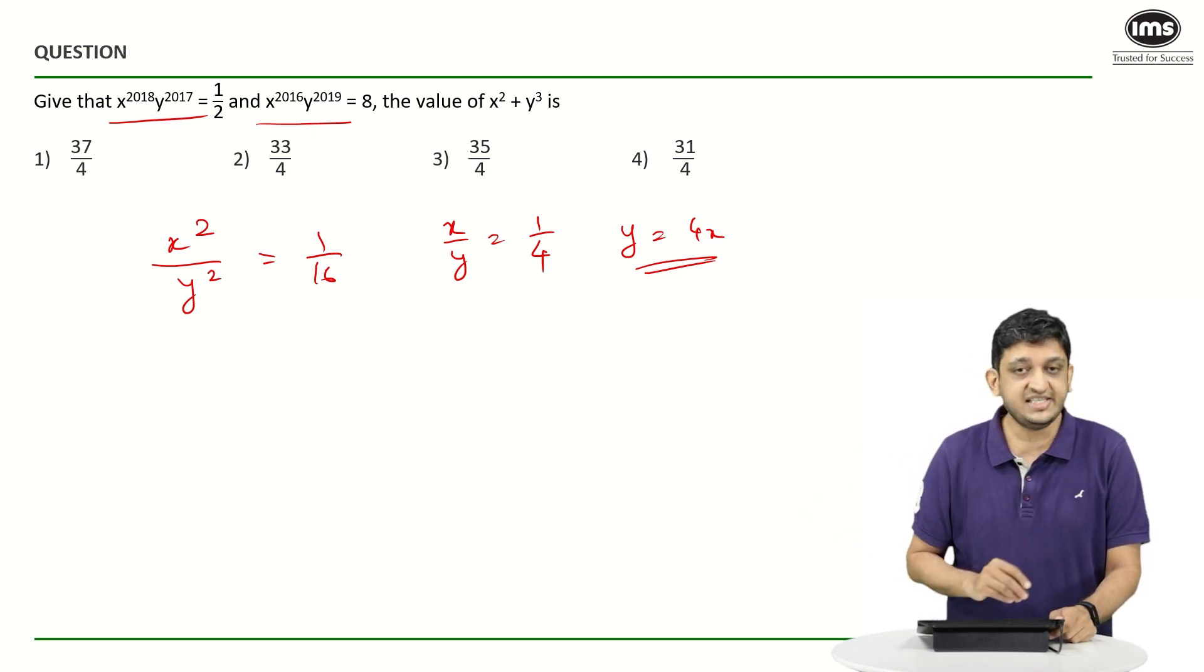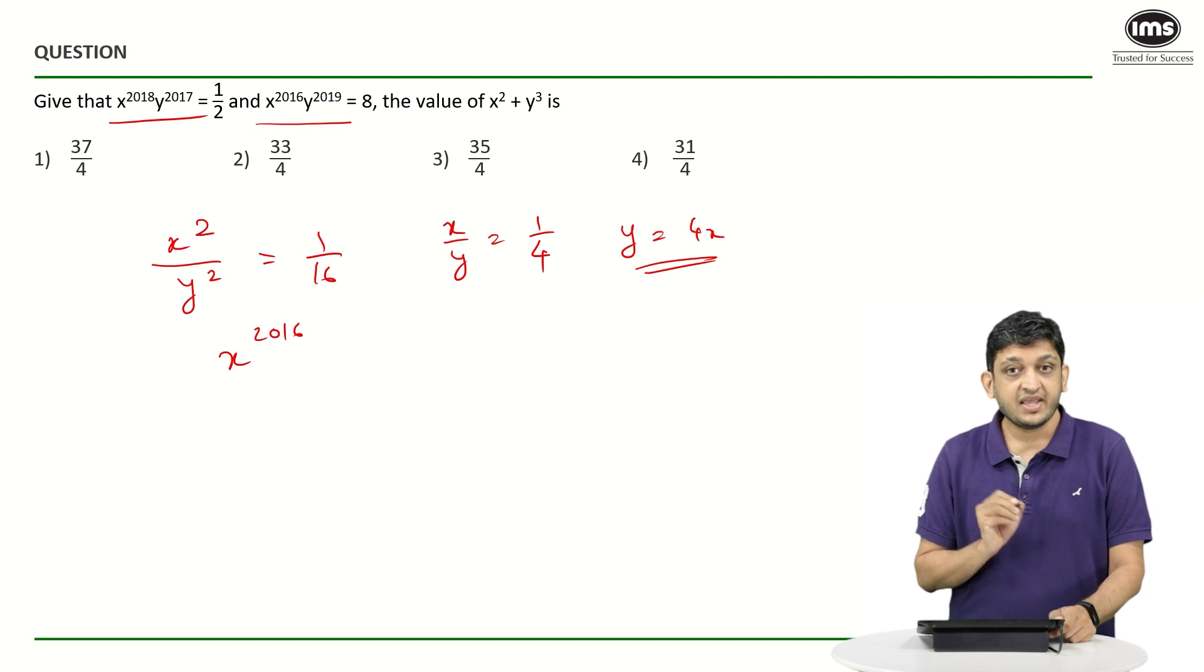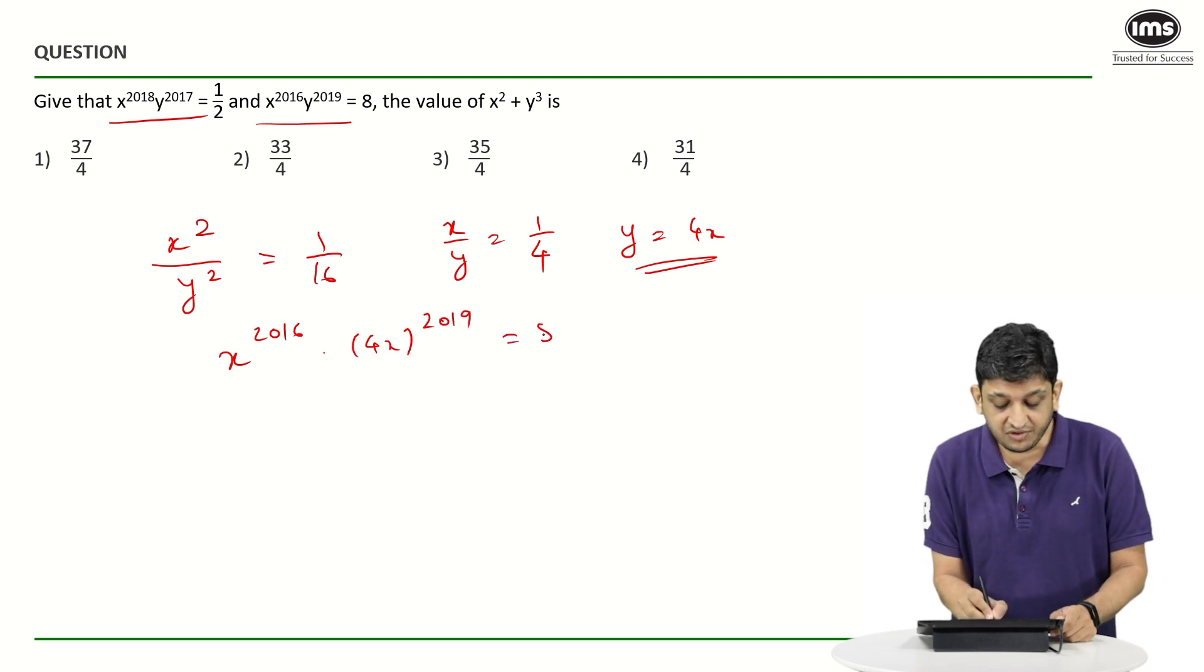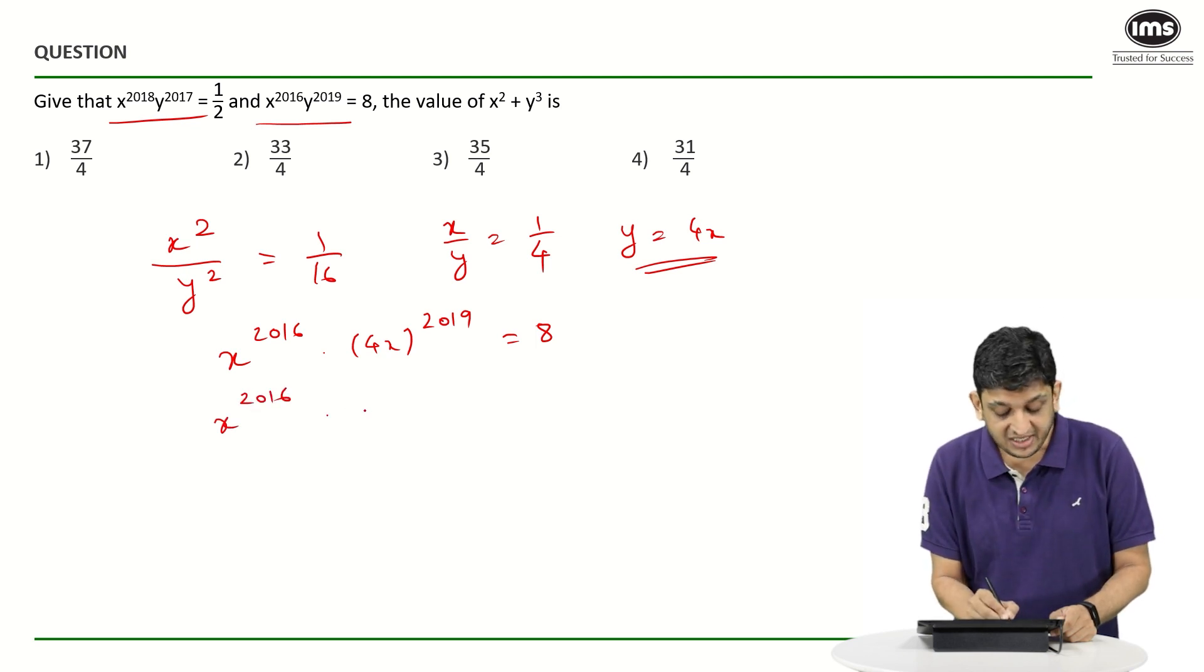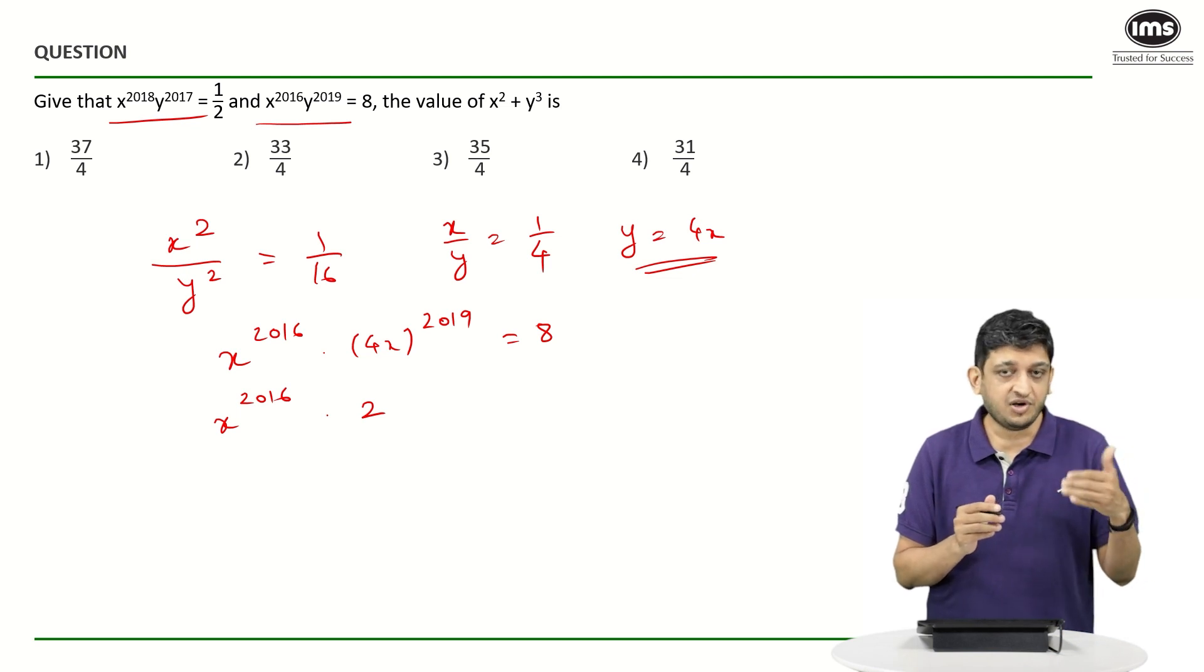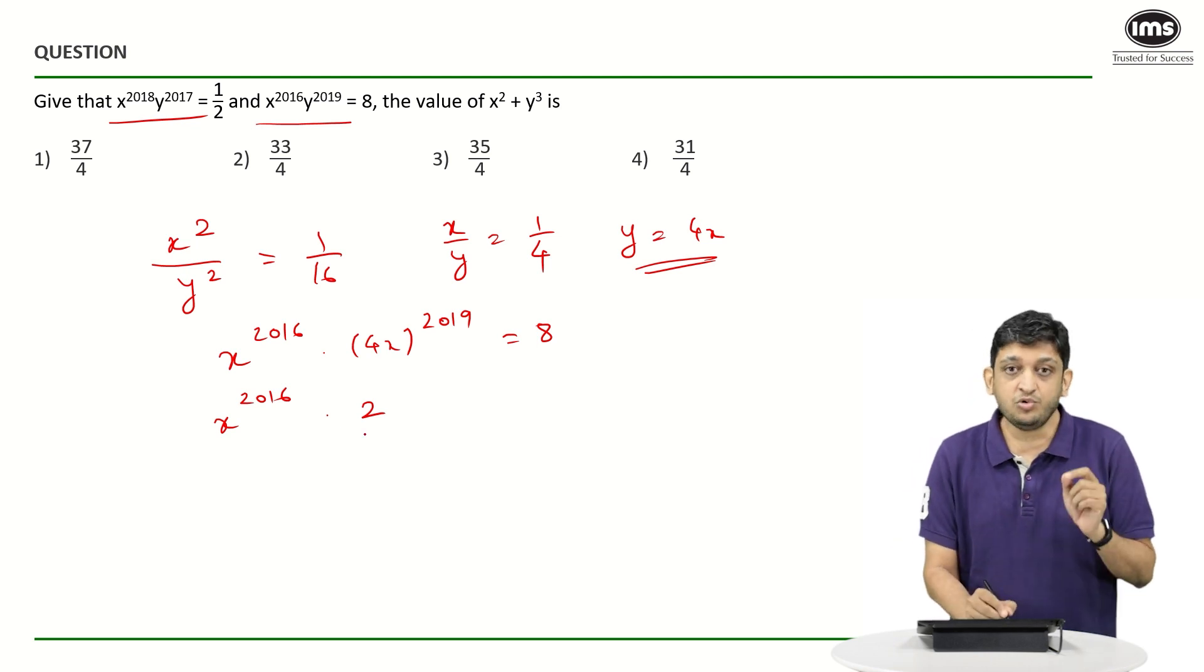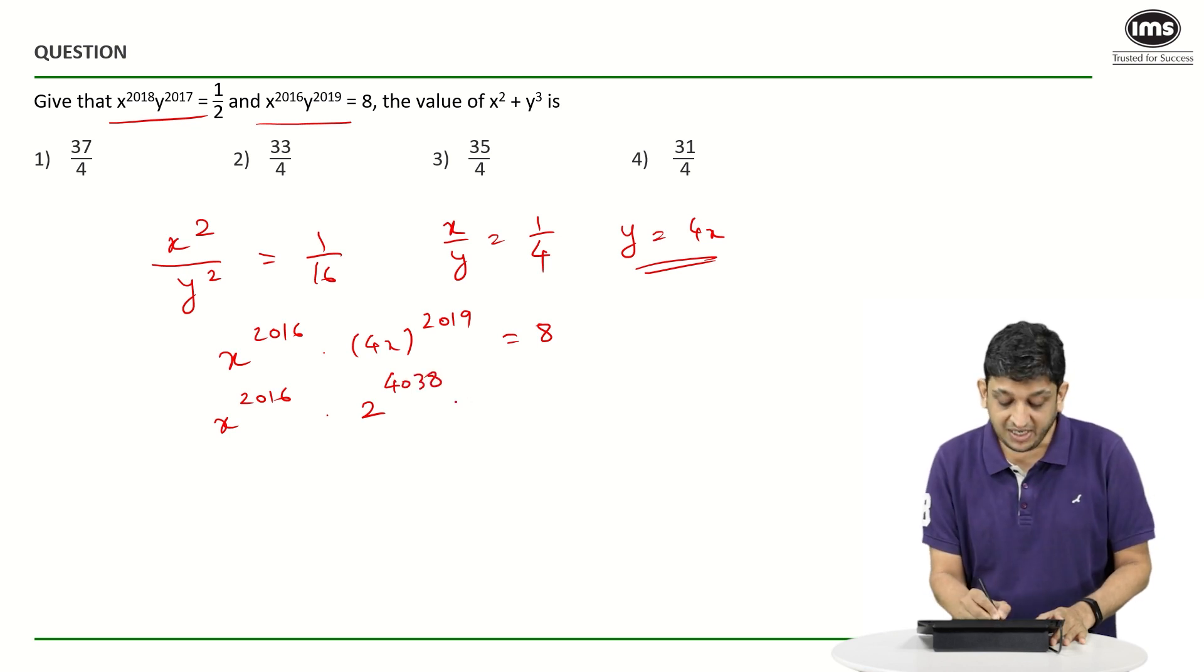Let's see what happens. In the second expression, X raise to 2016 will be written as it is. Instead of Y raise to 2019, we are going to write 4X the whole raise to 2019, and this product is going to be equal to 8. If you simplify this further, you are going to see X raise to 2016 multiplied by 2 square - because 4 is in the form of 2 square - 2 square the whole raise to 2019, which will become 2 raise to 2 into 2019, or 2 raise to 4038, multiplied by another X raise to 2019 equals 2 cubed.